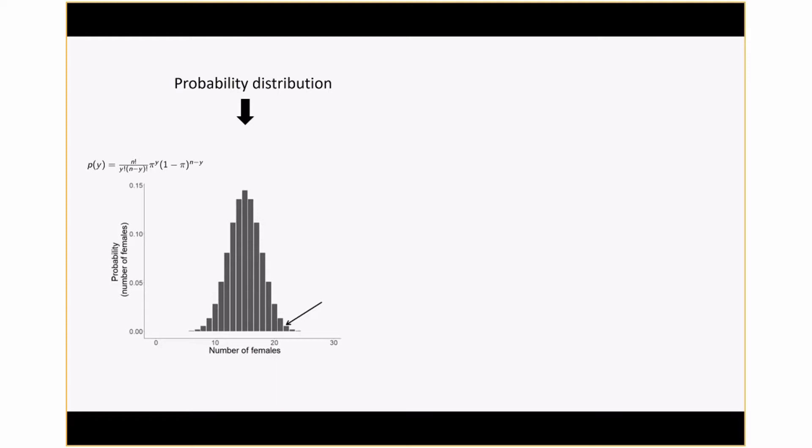I'd like to review the probability distribution from the last video. The idea was that we set pi equal to 0.5 and varied y from 0 to 30, which was on the x-axis. On the y-axis, we had our probability distribution.